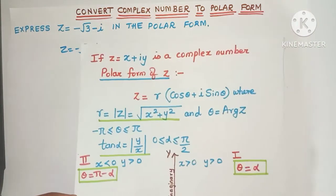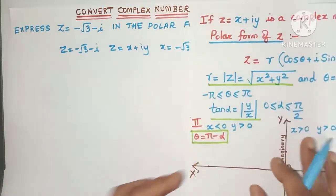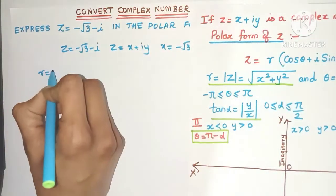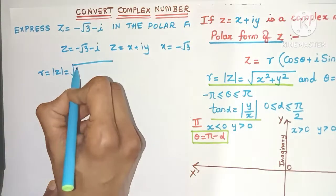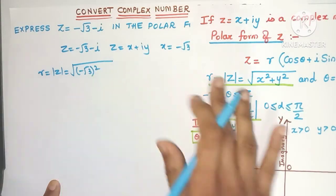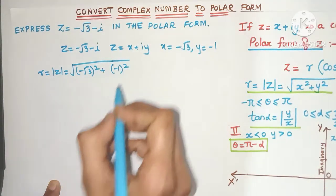Now since we know x and y value we can easily find out the r value, that is the mod of z. So r = mod of z. What is the formula? Square root of x², which is (-√3)², and this is (-1)². Now you know that whenever you square a minus it becomes plus, √3 squared will be 3 plus this will be 1.